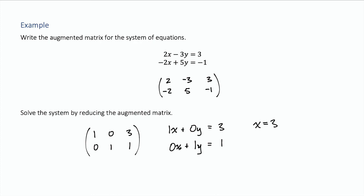The second one: 0x is 0 and 1y is y, so y equals 1. That's the solution to this system of equations using the augmented matrix. You can check your answer by plugging these in. If you plug 3 in for x and 1 in for y, both equations are satisfied.